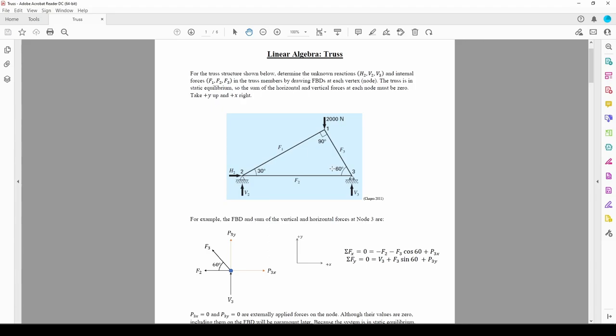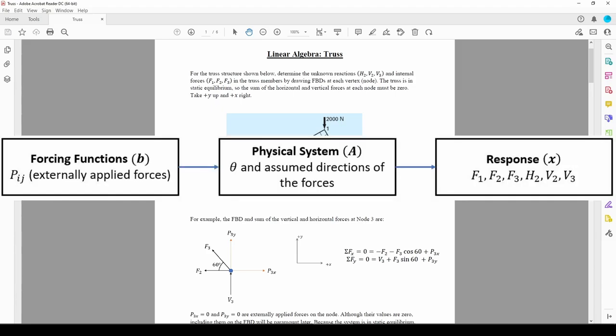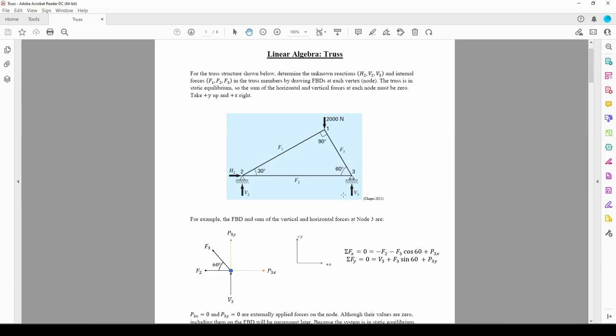The responses are the six forces we want to find. Once again, we want to find the forces within each truss member, F1 through F3, and the three reaction forces, H2 to V3. We'll confirm the cause-effect diagram once we form the A, X, and B matrices. Unlike previous linear algebra problems, we aren't directly given the equations governing the system, so we have to derive them ourselves.